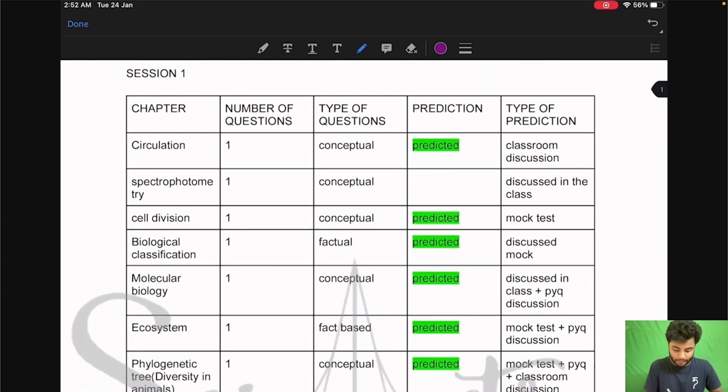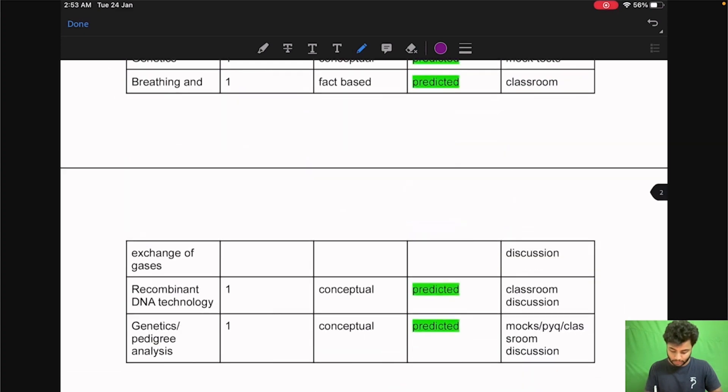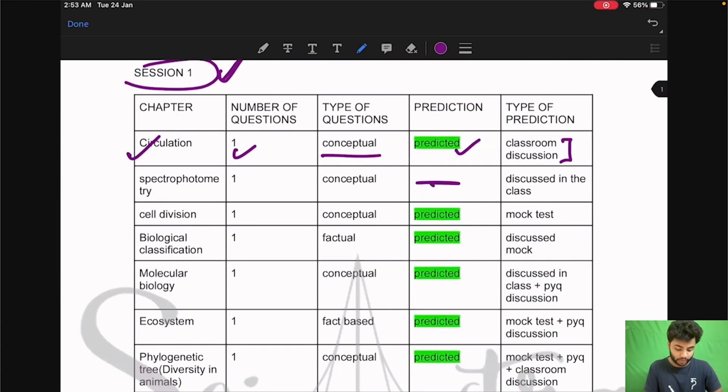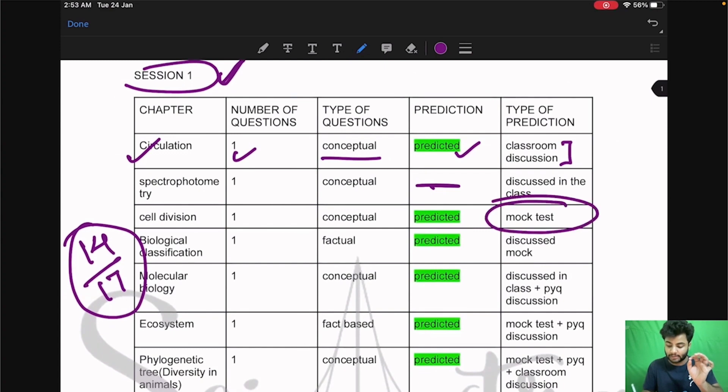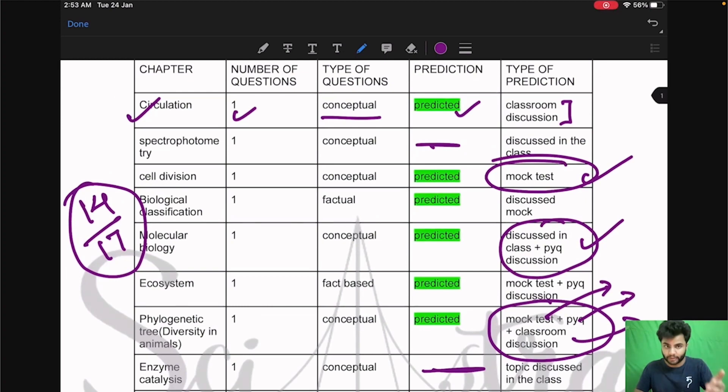Now as you see chapter was circulation. One question came from here. Conceptual question came. It was already predicted and discussed in the classroom. Now if you see in session 1, except this question and this question and one more here, so total you know 17 questions. In that only 3 questions were not predicted. So 14 questions out of 17 questions in NEST 2022 were already predicted by the biology mentor. Either they were already asked in the mock test or they were already taught in the previous year paper and classroom discussion. As you can see here some of the predictions are from mock test, previous year paper as well as the classroom discussion. The classroom notes that we give at Sciastra.